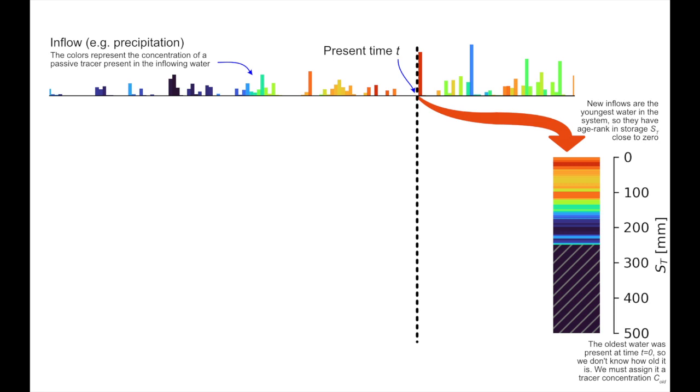The age rank storage, S sub t, is a measure of where a parcel of water sits in this column, measured from the top. We know when each parcel of water arrived, and so we know how old it is. The parcel of water's age rank storage is a measure of how much water in storage is younger than that parcel.